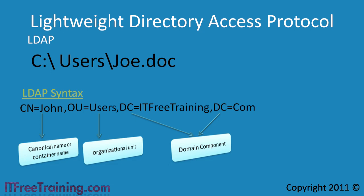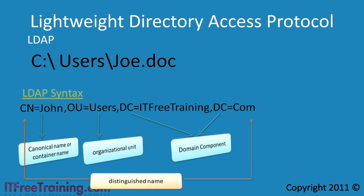This kind of syntax is called the distinguished name. Every object in Active Directory has a distinguished name, which identifies the object uniquely inside Active Directory. Just like a file has a full path and file name to identify it on a hard disk, LDAP has a distinguished name to identify only that object in Active Directory.